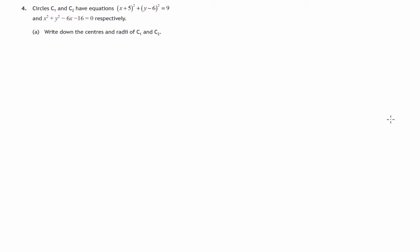So we're given a couple of circle equations, two different types of forms, and we're asked to write down the centers and the radii of the two circles. So let's proceed with that.